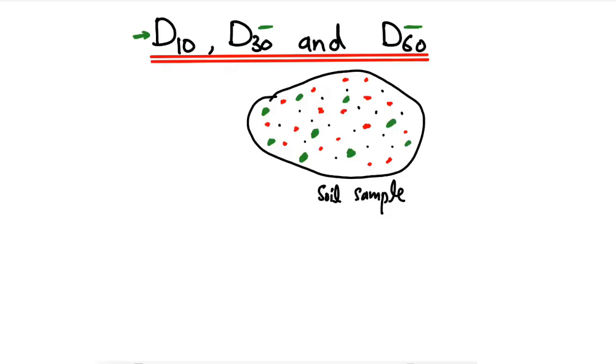It's not possible that you always have the same soil particle size in the soil sample if you take it randomly from any field. They always have different soil particle sizes.